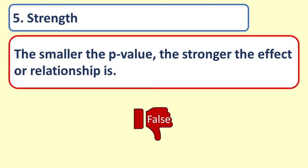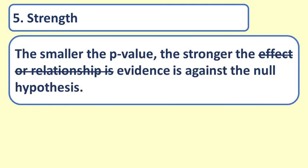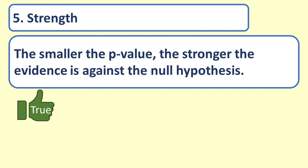False. The smaller the p-value, the stronger is the evidence against the null hypothesis. A small p-value means it is really unlikely to get this result if the null hypothesis were true. The effect could still be weak, but because the sample is large, there is strong evidence that the effect we see in the sample, such as being different from the mean in the null hypothesis, exists in the population.